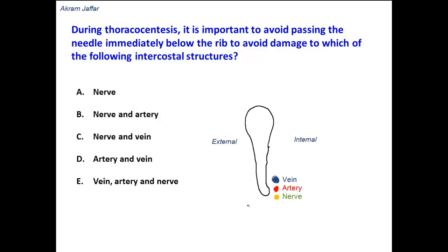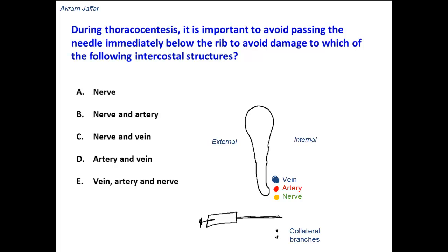In thoracocentesis, it is usually advisable to avoid this neurovascular bundle. So the needle should not be inserted immediately below the rib. The needle should be inserted a little bit lower, but at the same time, it should not be closely related to the upper border of the rib below, because the upper border of the rib below will contain the collateral branches of the neurovascular structures.